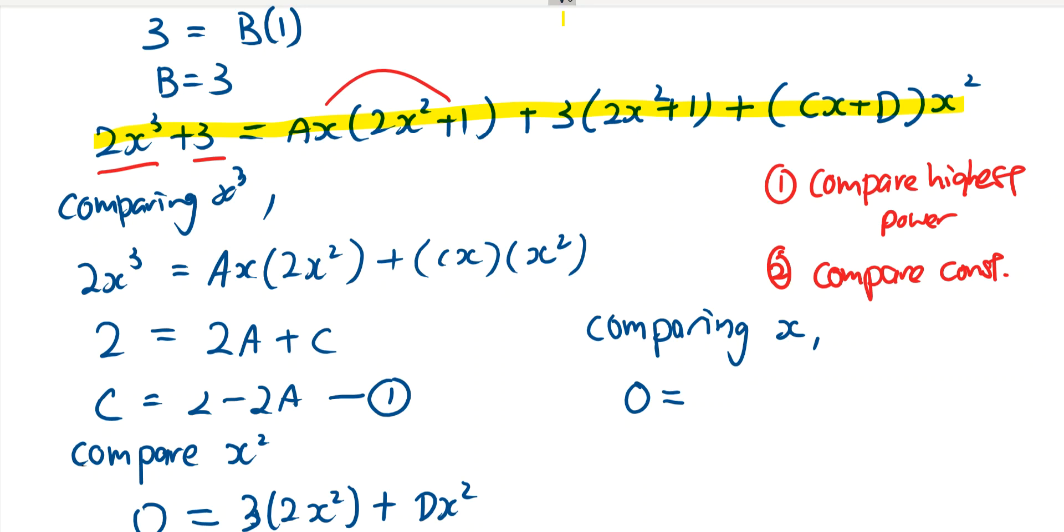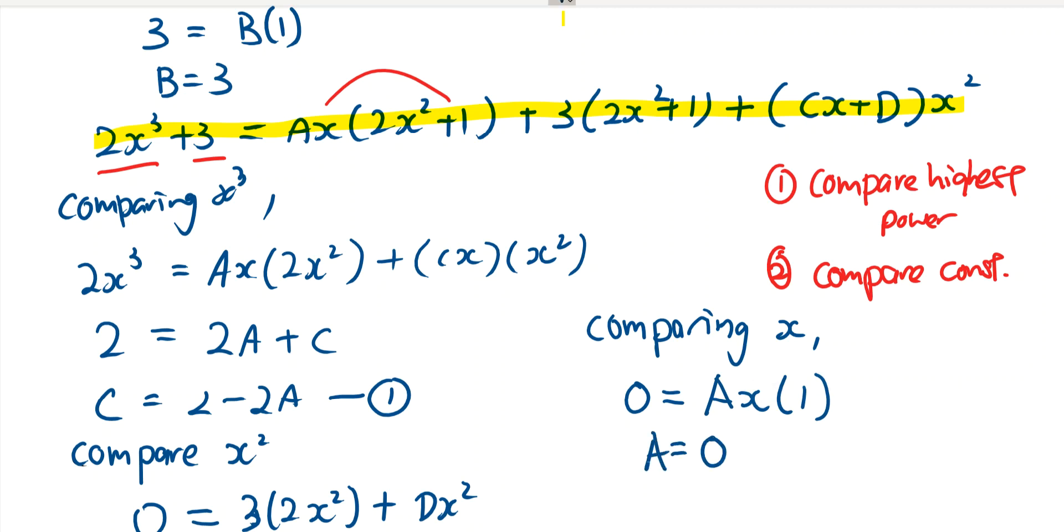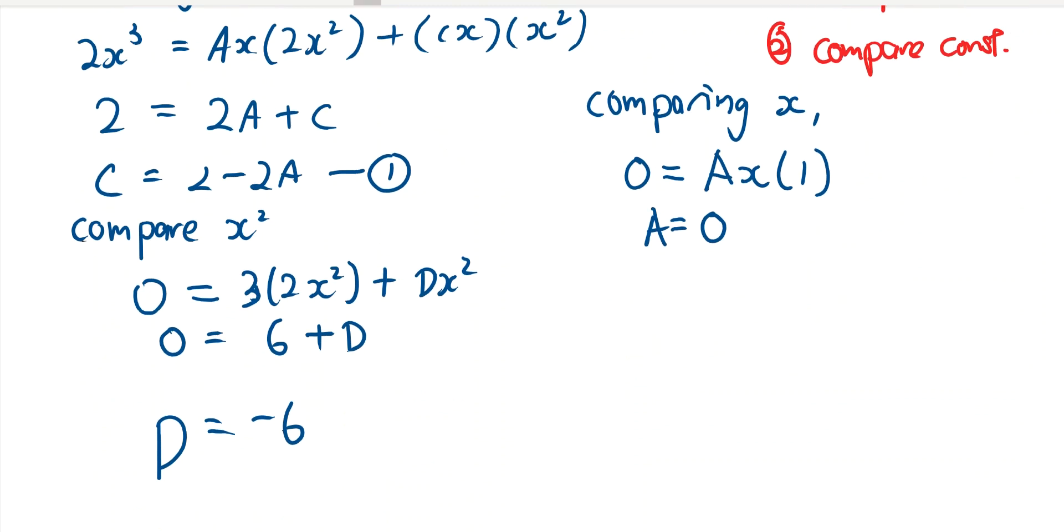So we have ax bracket 1, and that would mean my a is equal to 0. So now we can put back a equals 0 into equation 1. So c is equal to 2.